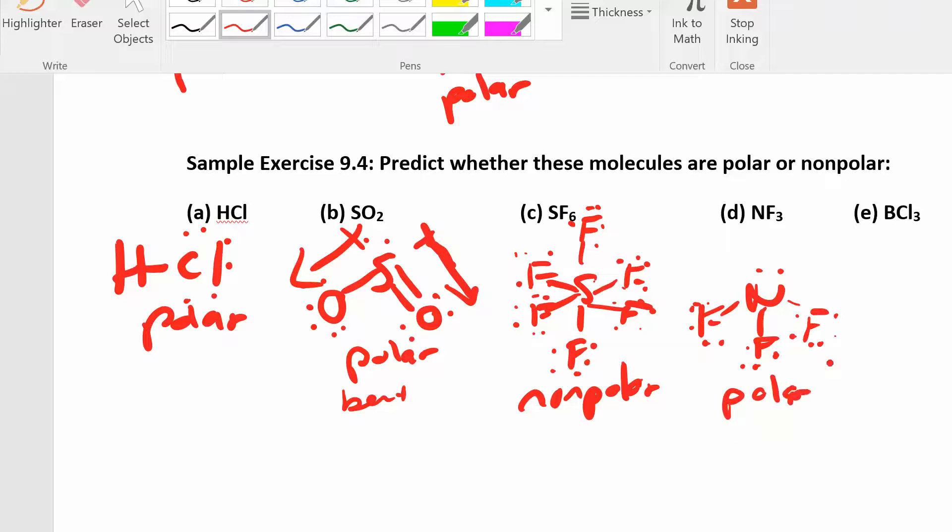And then BCl3, remember boron, is one of the exceptions to the rule, the octet rule. It's happy just having three bonds or six electron pairs. So this guy is nonpolar because everything's going to cancel.